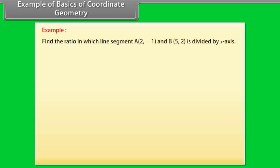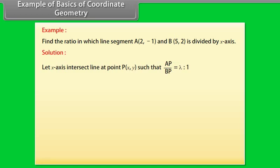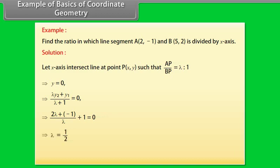Example: Find the ratio in which the line segment joining A(2, −1) and B(5, 2) is divided by the x-axis. Solution: Let the x-axis intersect the line at point P(x, y) such that AP by BP equals λ to 1. It implies y equals 0, which gives λ(Y2) plus Y1 divided by (λ plus 1) equals 0. Solving: 2λ plus (−1) by (λ plus 1) equals 0, so λ equals 1 by 2. Hence AP by BP equals 1 by 2 to 1.